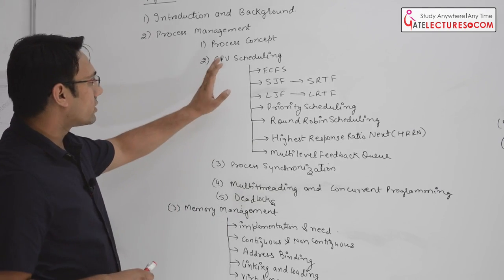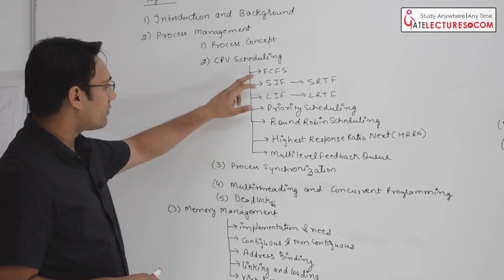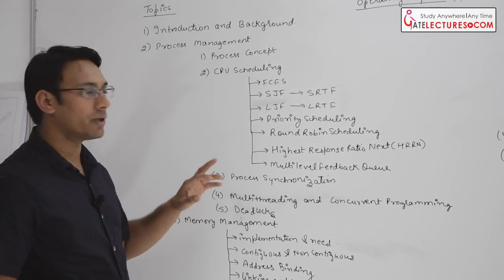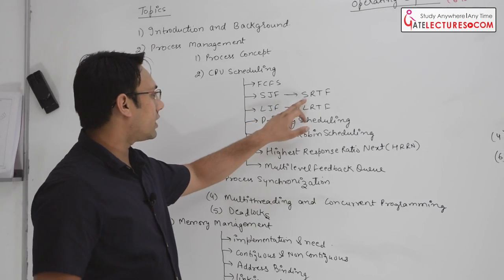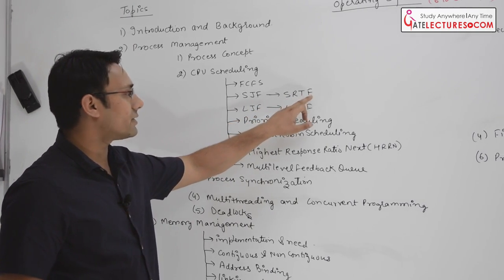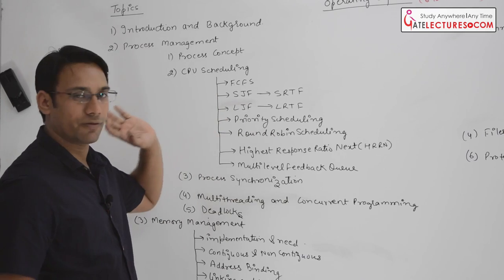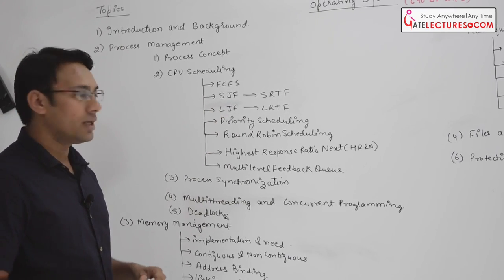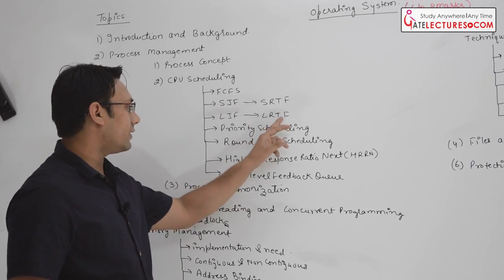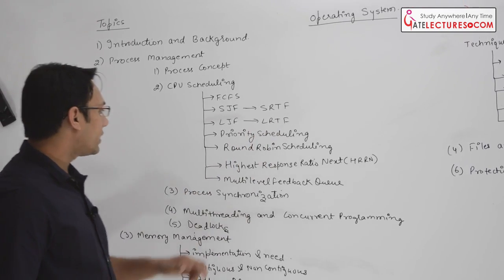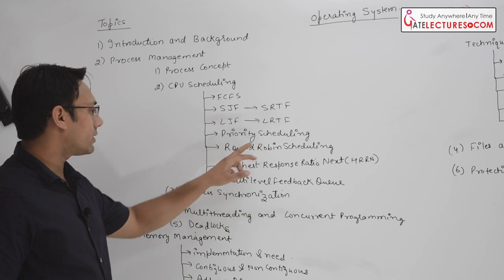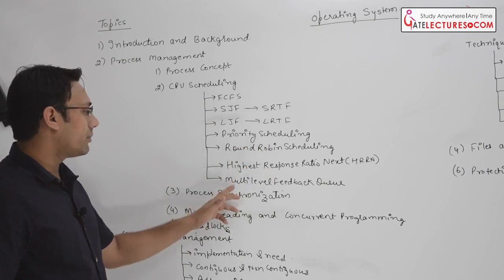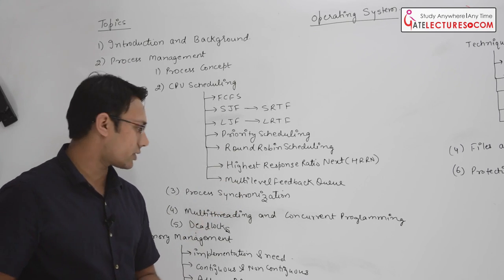Then we are going to discuss about CPU scheduling, where we have: First Come First Served scheduling, Shortest Job First scheduling, Shortest Remaining Time First scheduling, Longest Job First scheduling, Longest Remaining Time First scheduling, Priority scheduling, Round-Robin scheduling, Highest Response Ratio Next scheduling, and Multi-level Feedback Queue scheduling.